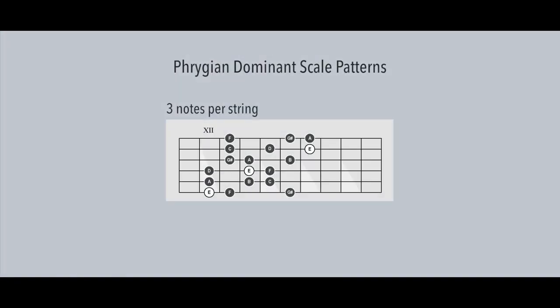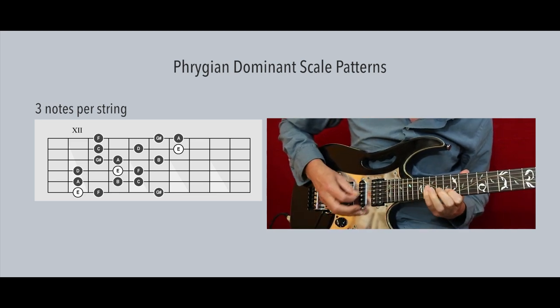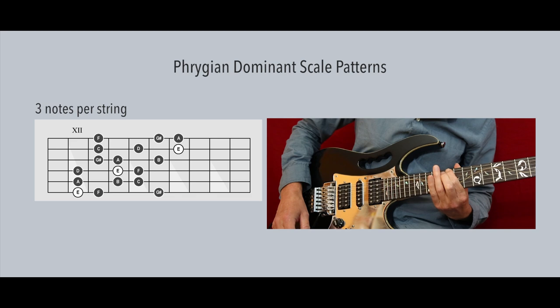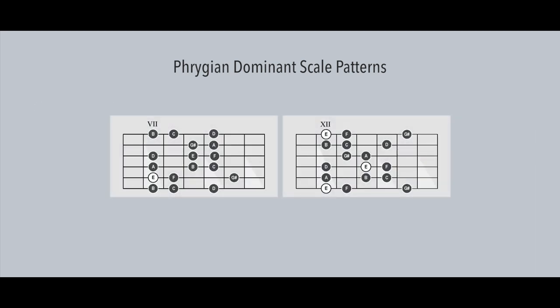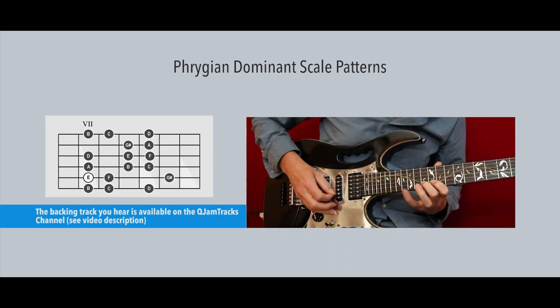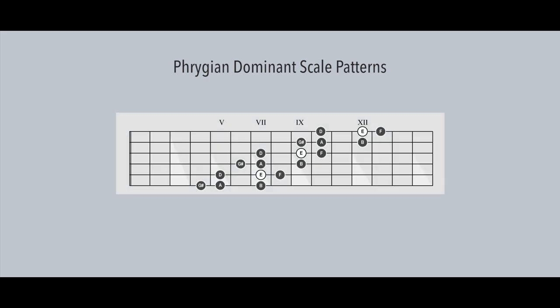This first pattern has three notes per string, which makes it easy in the higher positions but a bit of a stretch on the lower frets. The next pattern is more condensed but doesn't have the same amount of notes on each string, which makes it a bit harder to play fast. It's safe to use in the lower as well as the higher positions. The next remarkable pattern is more like a diminished arpeggio and starts on the major third of the Phrygian dominant scale. It has a very convenient and logical fingering, but the minor sixth is missing.